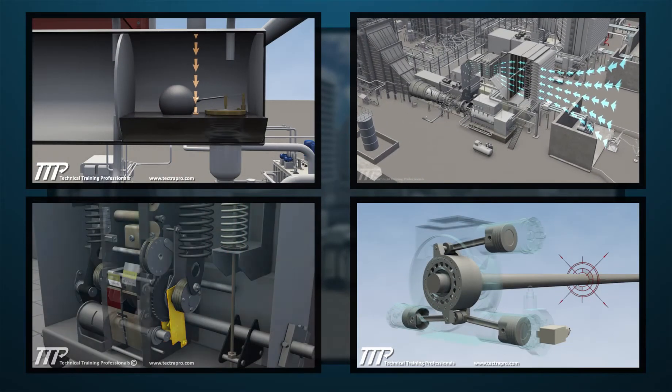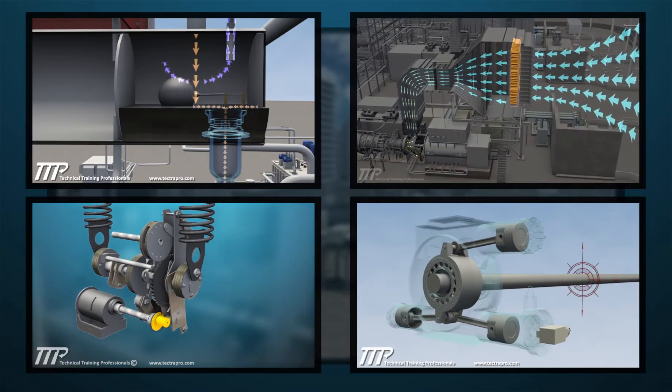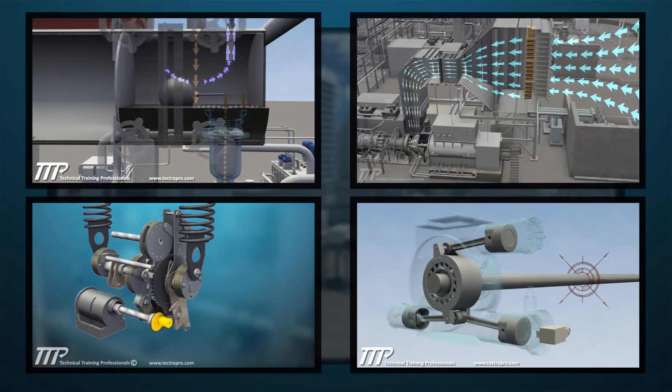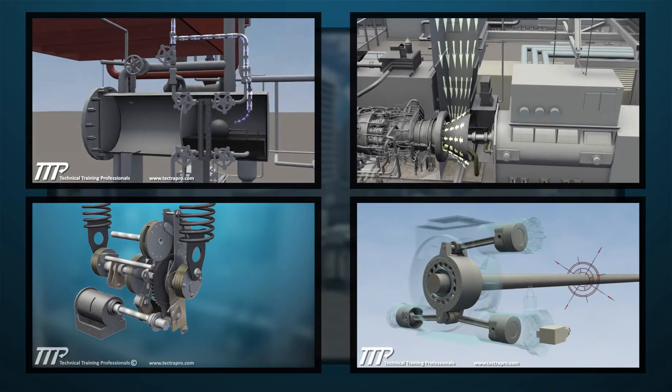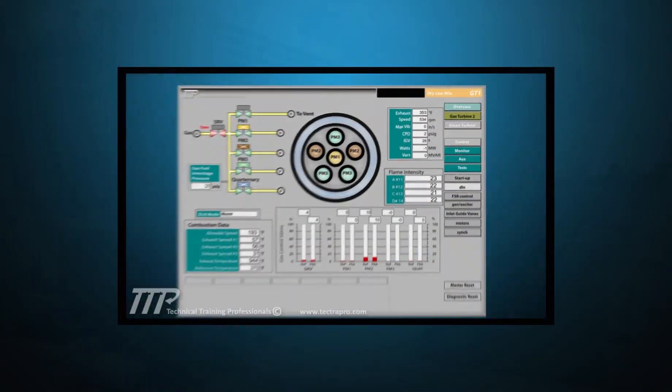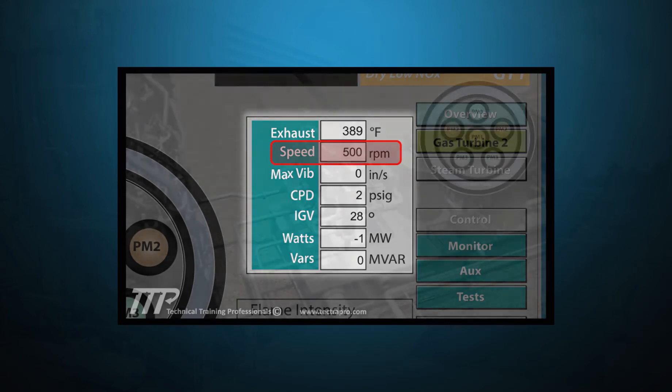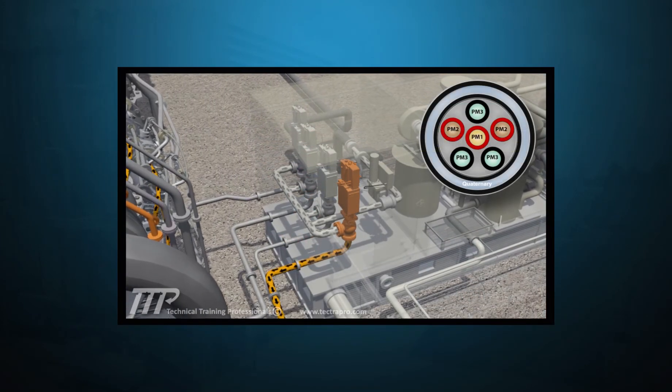Although TTP animations provide thorough design and operation principles, when applicable, the courses will include the use of existing control room operating screens with live data that accurately follow the process being explained in the 3D animation. This ensures that the trainee will connect the screen indication to actual equipment operation.